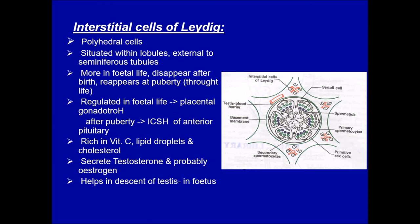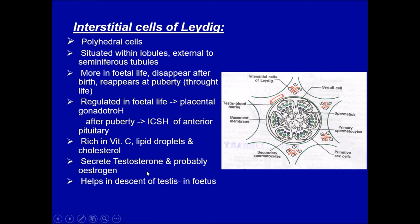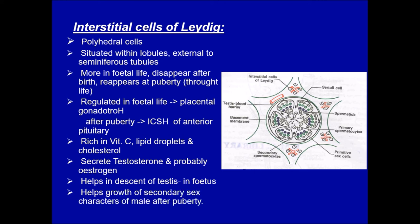The main function of interstitial cells of Leydig is secretion of testosterone — the male hormone giving all male features. They probably also secrete estrogen. Testosterone secreted in fetal life helps in the descent of the testis into the scrotum by birth. At puberty they reappear and drive secondary sex characteristics — beard, mustache, broad chest, and other male features.